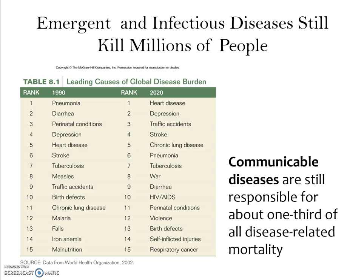Here we're looking at causes of disease in two columns: 1990 and 2020, a projection into the future. Communicable diseases were particularly prominent 25 years ago and are still quite high in our global disease burden, but they have reduced. Diarrhea, for example, has a variety of environmental causes — poor water quality, poor sanitation — and can be very severe without access to medical care.